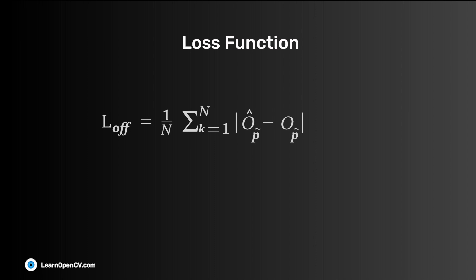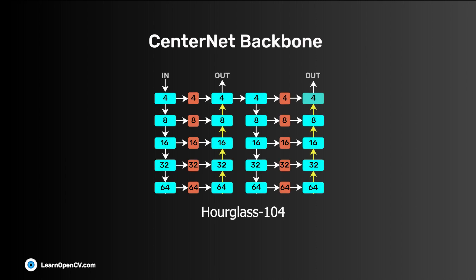The offset loss equation and the size loss equation are both mean absolute error equations. CenterNet models come with three different backbones.